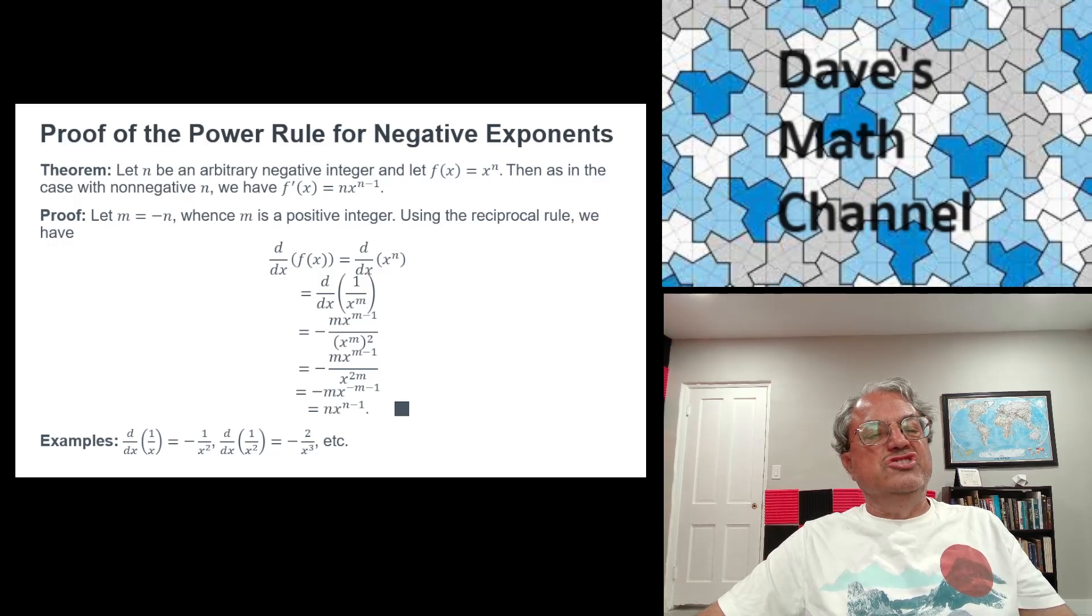In this case, our function is just x^m. We're going to get the derivative in the numerator. Remember, we have to negate the whole thing. So we get minus the fraction whose numerator is the derivative of x^m, which is mx^(m-1). We know that because m is not negative. And we have [x^m]^2 in the denominator.